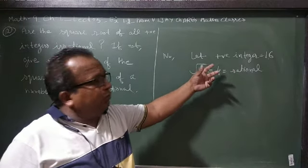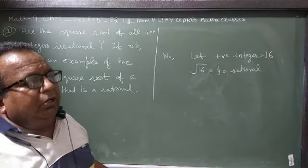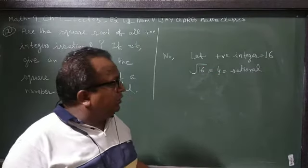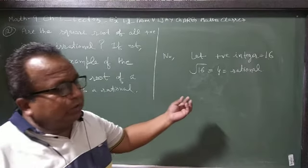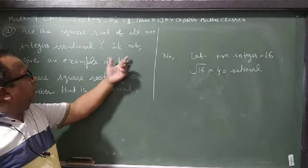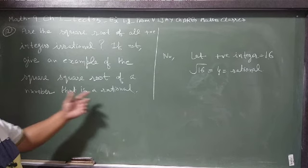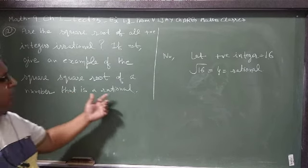We have 16, suppose 4, 9, 25, 36. The square root of 16 is 4, which is rational. If not, give an example of the square root of a number that is rational.